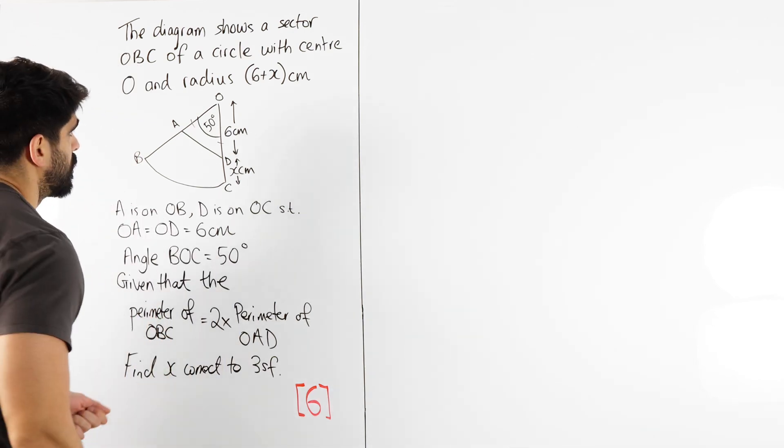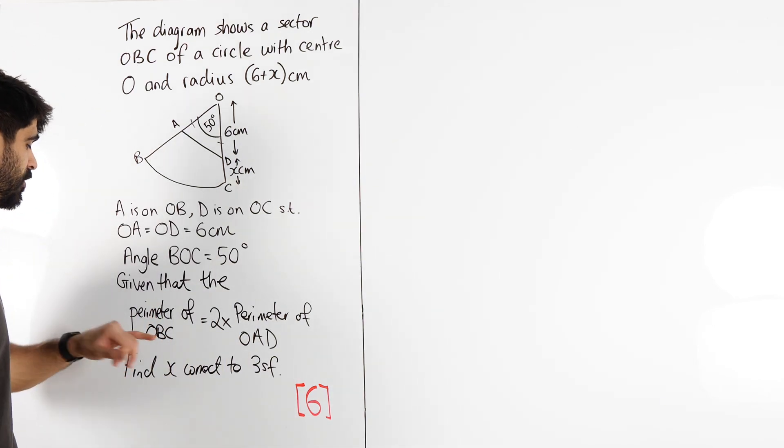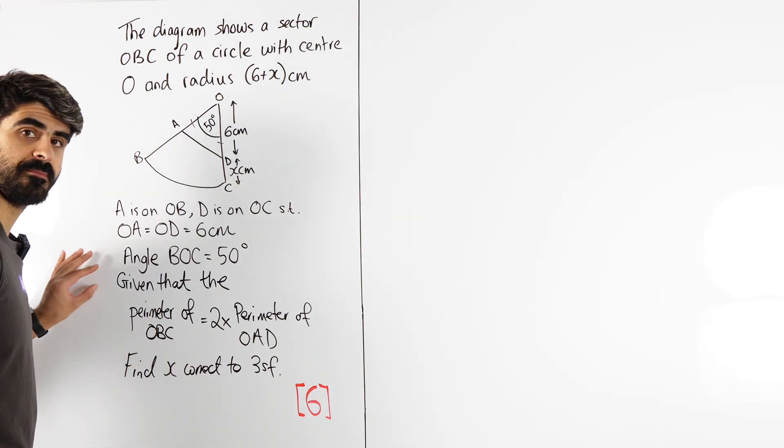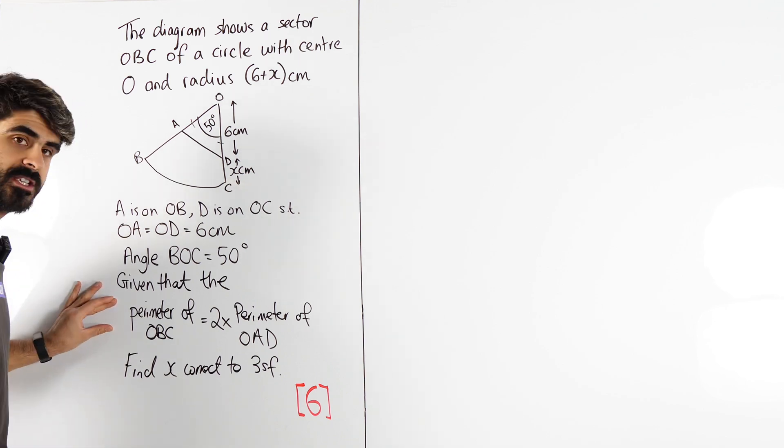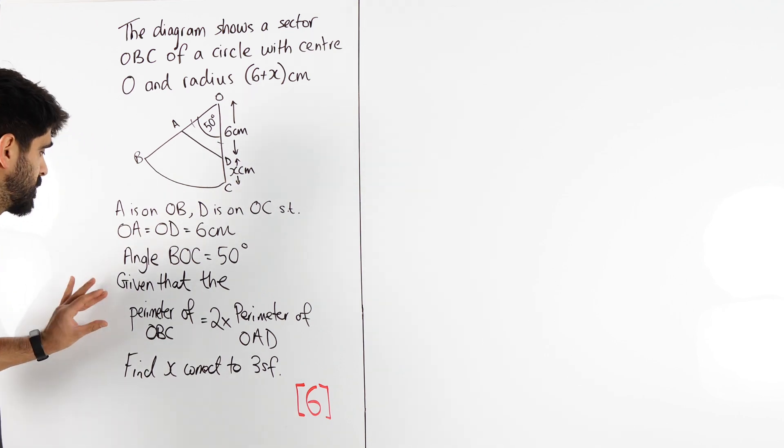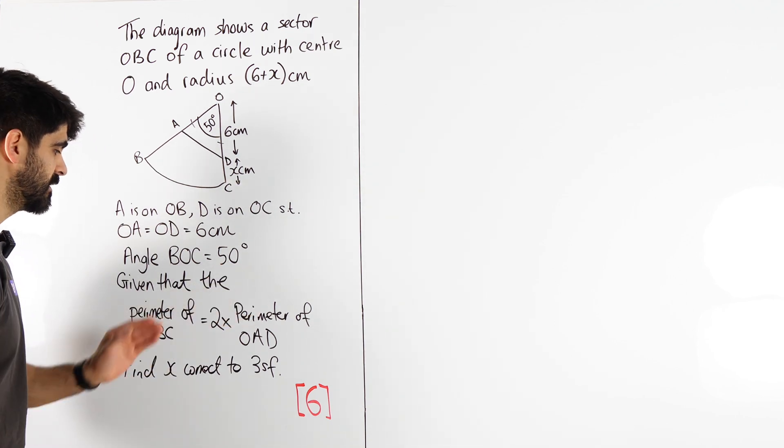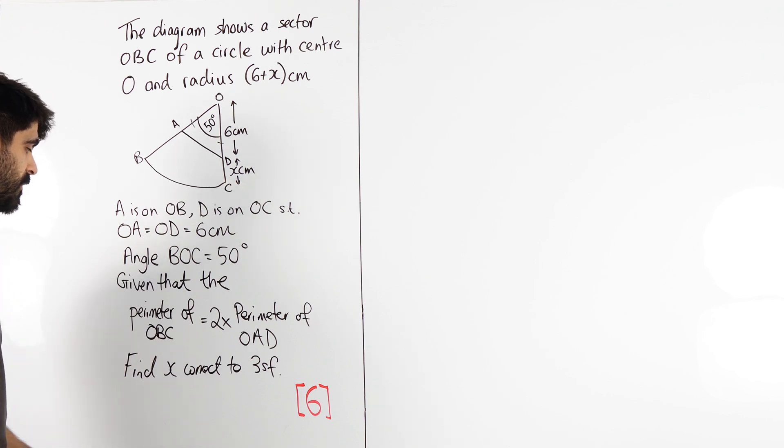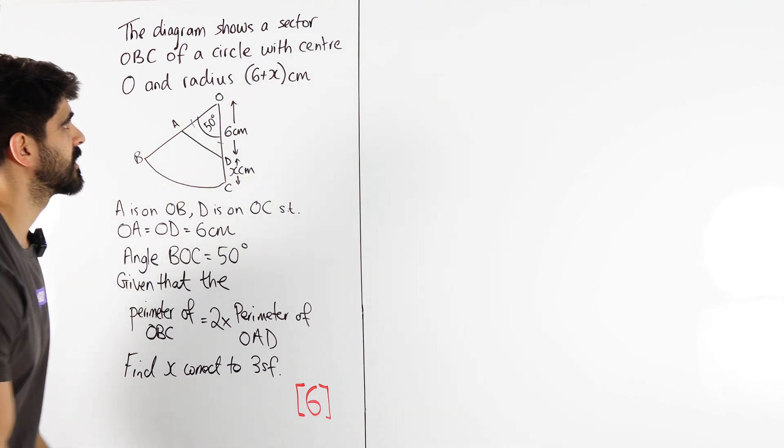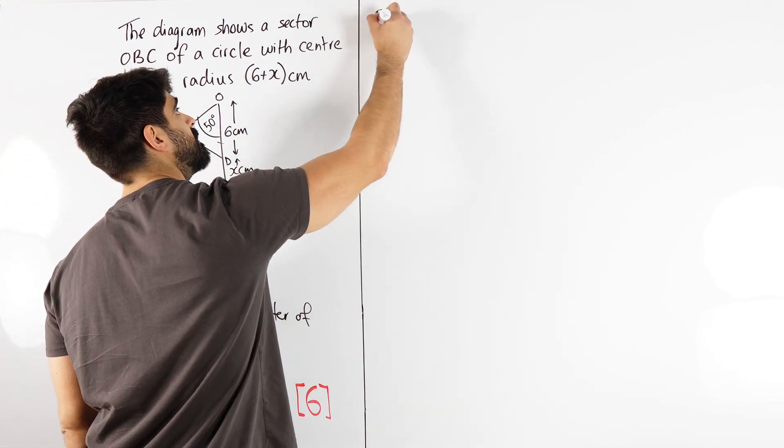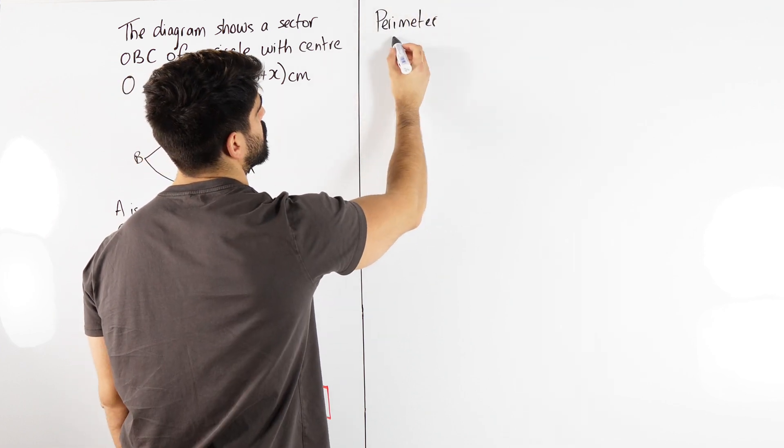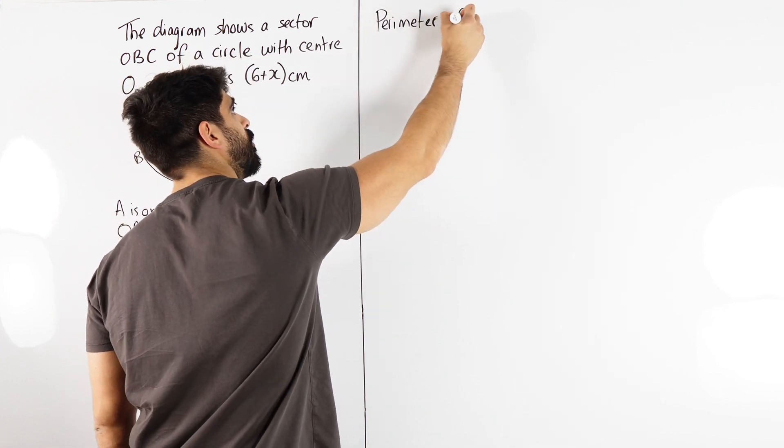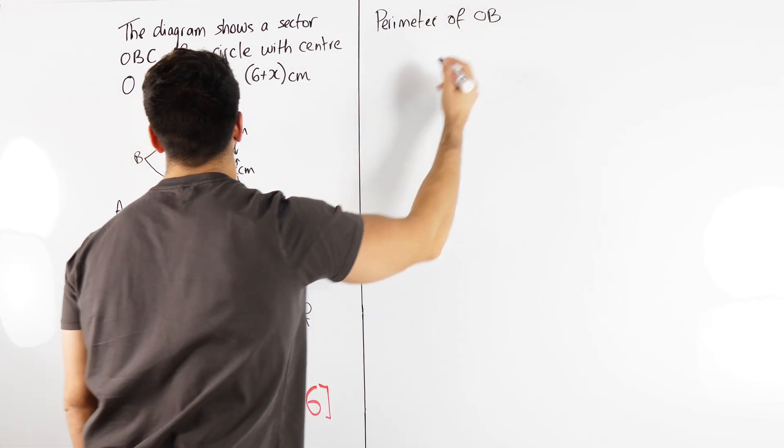Let's first look at the perimeter of OBC. So remember, we've practiced a few of these now. I told you guys, whenever you see the word given, that is where your working starts. Okay, so we're going to work out the perimeter of OBC, perimeter of OAD, double that one, equate them, and solve for x. So the perimeter of OBC, which is our sector, so our perimeter of OBC.